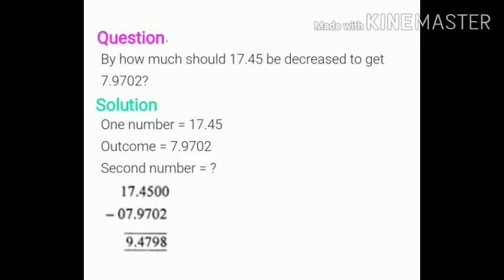Now today's last question. By how much should 17.45 be decreased to get 7.9702? So here the greatest number is 17.45. So we have to subtract 17.45 minus 7.9702. By subtracting we get 9.4798.